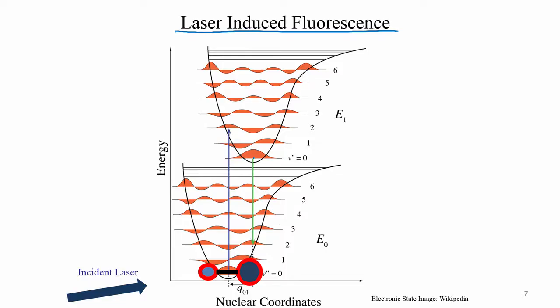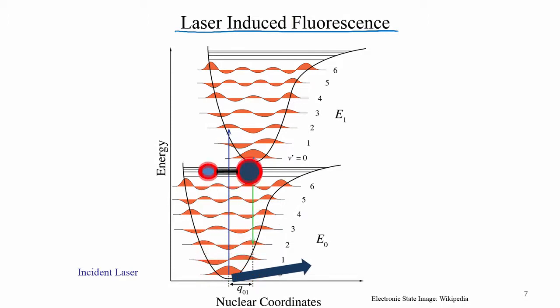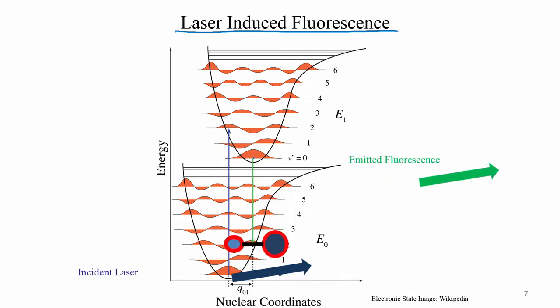Just to give you a very brief recap, we were discussing laser-induced fluorescence. We have this energy nuclear coordinate diagram where essentially the OH was residing in the ground state. The incident laser comes and hits the OH molecule, it gets promoted to a higher electronic state, undergoes inter-system crossing, gets down to the lower electronic state and then goes back to the ground state.